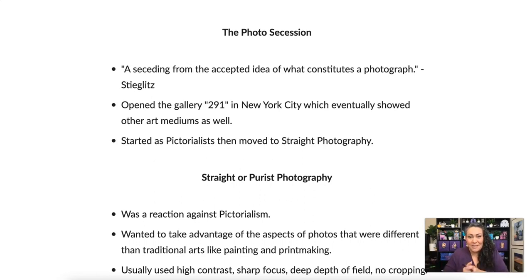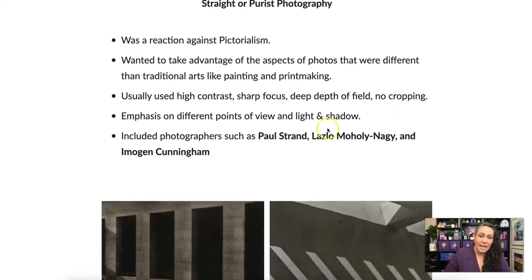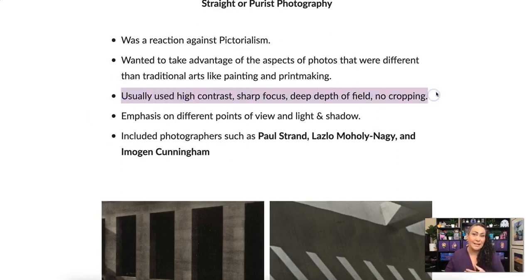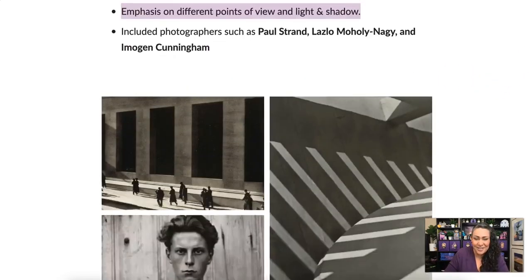The Photo Secession said: let's use what is special about a photograph because it is its own medium. It was a reaction against pictorialism. It tended to have very high contrast, sharp focus, and deep depth of field. They were adamant that you could not crop — all your cropping and framing was done in camera. There was a lot of emphasis on different points of view, light, and shadow.